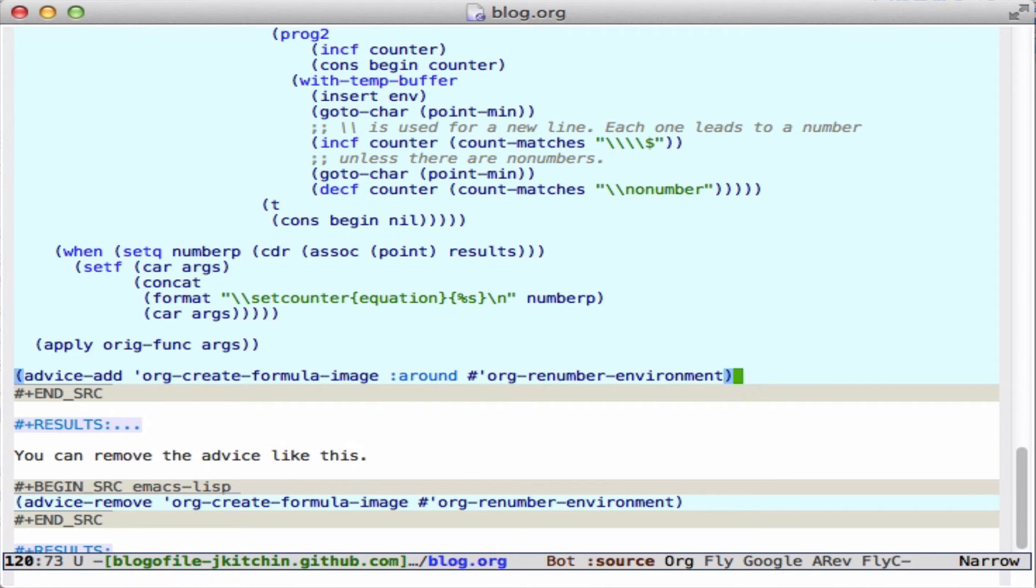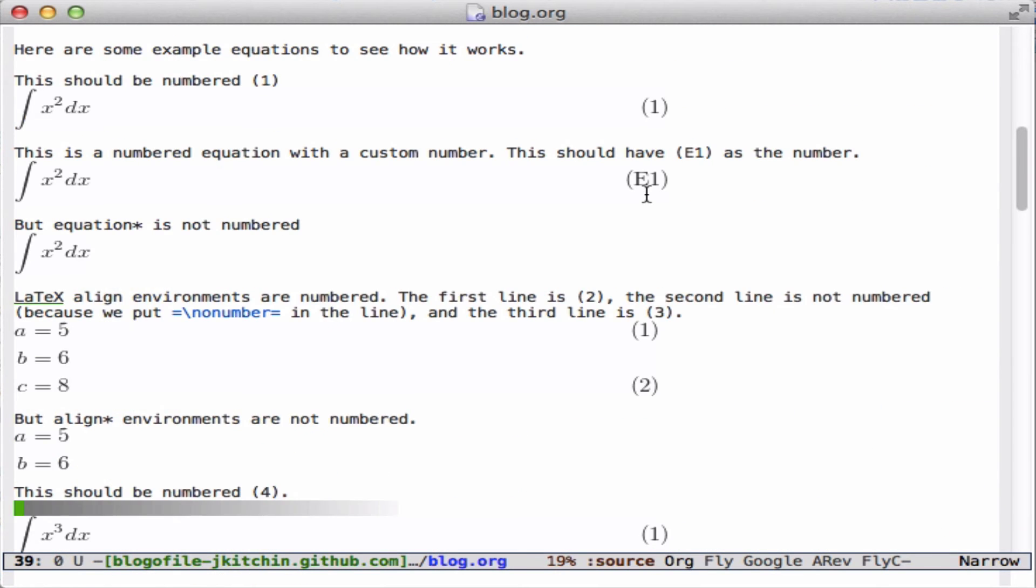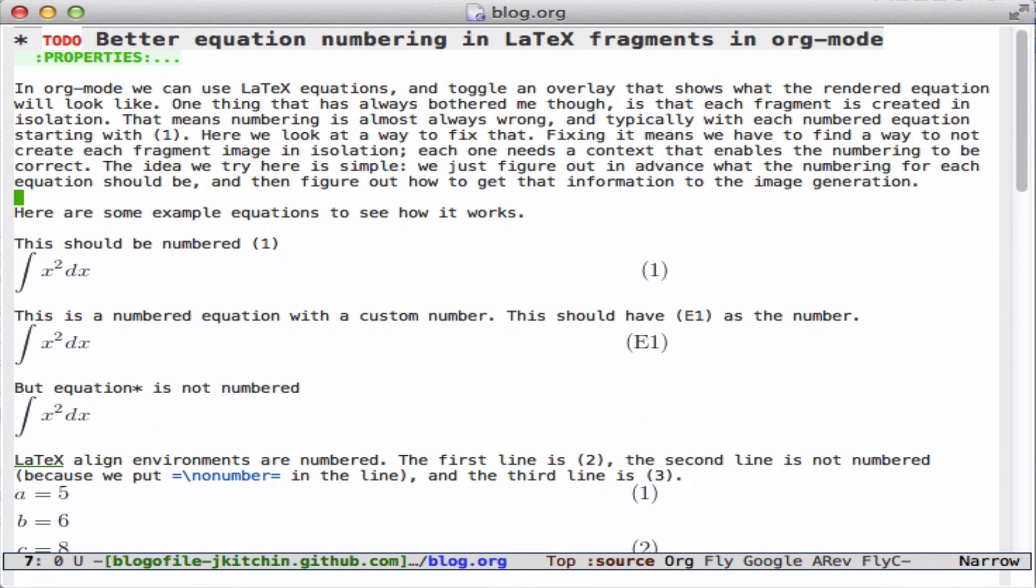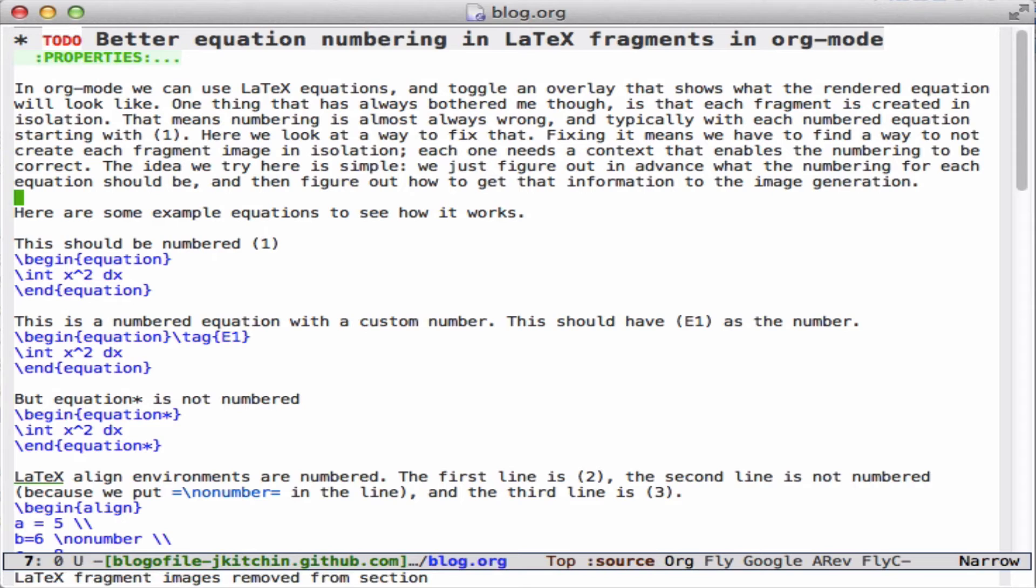So this turns on the advice. Let's come back up here, turn these off, get rid of the old ones, and turn them back on. So now what should happen is this should be labeled 1, this will be E1, no label, and this should start at 2, and then it should go down 3, 4, 5, 6, 7, 8.